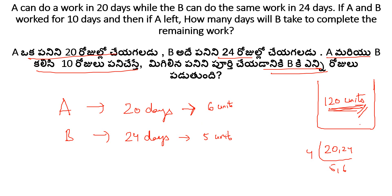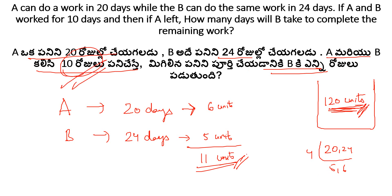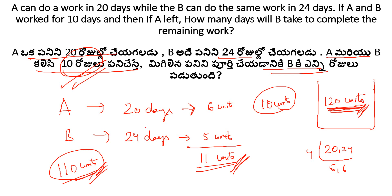A does 120 divided by 20 equals 6 units per day. B does 120 divided by 24 equals 5 units per day. Together A and B do 11 units per day. In 10 days they complete 110 units. Remaining work is 120 minus 110 equals 10 units. B does 5 units per day, so B takes 10 divided by 5 equals 2 days.